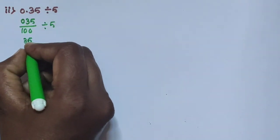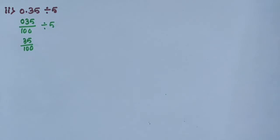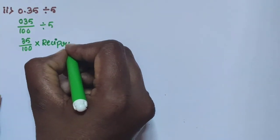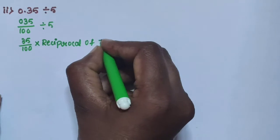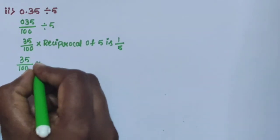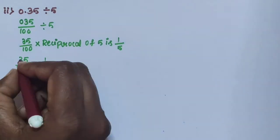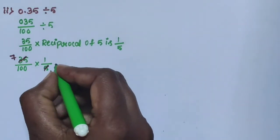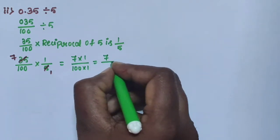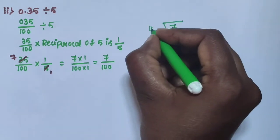0.35 means 35 divided by 100. The division sign can be removed using a reciprocal of fraction. The reciprocal of 5 is 1 by 5. So we have 35 divided by 100 into 1 by 5. Simplify: 5 ones are 5, 5 sevens are 35. Remaining: 7 into 1 divided by 100, giving 7 divided by 100.